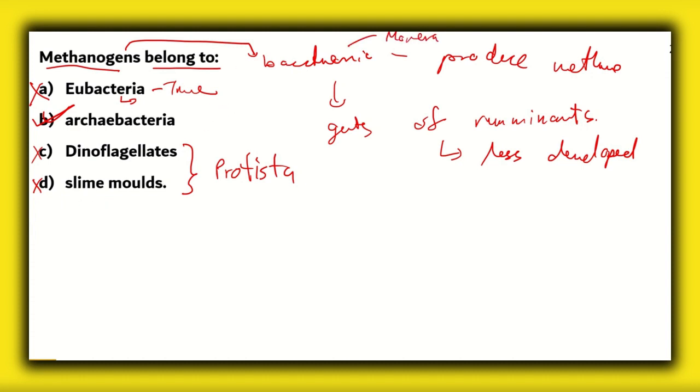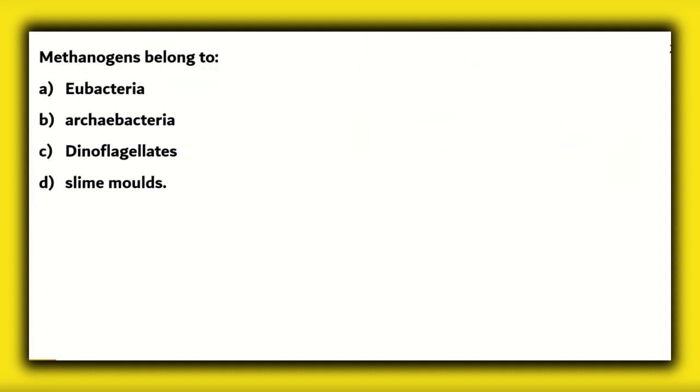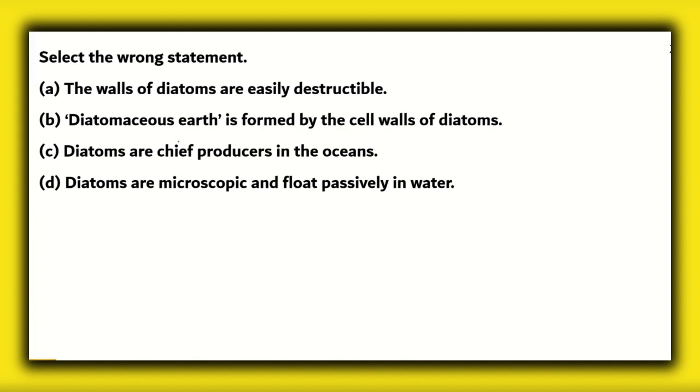So, here we're referring to methanogens which are a type of bacteria. Bacteria belongs to the kingdom Monera. So, that means option C and D are incorrect. The correct option for this question is option B, Archebacteria. Now, let's look at the final question of this episode.